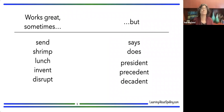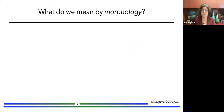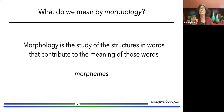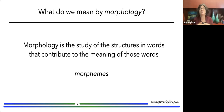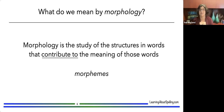We need more than just pronunciation to understand the spelling of many words — and this is where morphology comes in. Let's make sure we're using the same terminology. I'm going to use this definition: morphology is the study of the structures in words that contribute to the meaning of those words, and those structures are called morphemes. Notice I say 'contribute to the meaning' rather than 'have meaning' or 'carry meaning' — that distinction is really important as we think about written language.